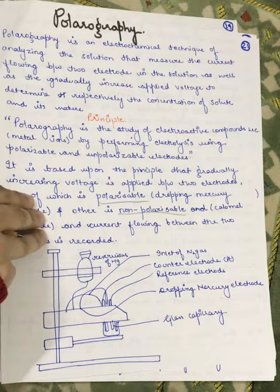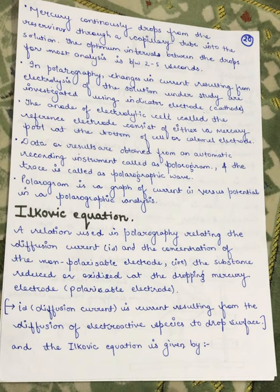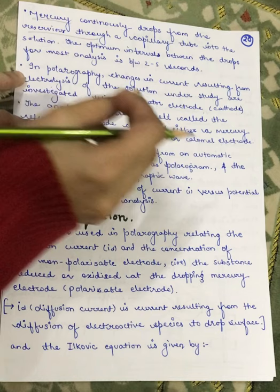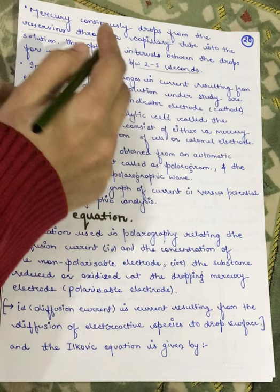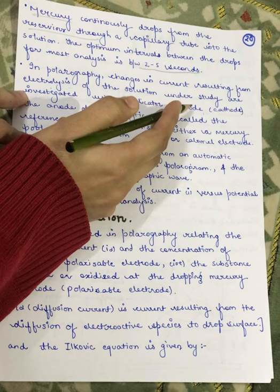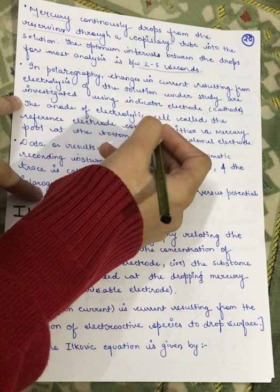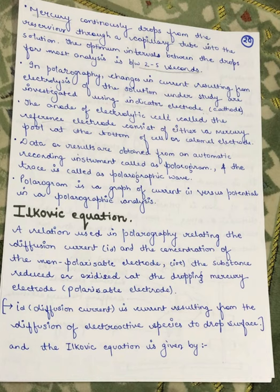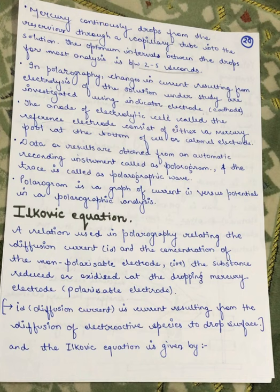Mercury continuously drops from the reservoir through a capillary tube into the solution. The optimum interval between drops for most analyses is between two to five seconds. In polarography, changes in current resulting from electrolysis of the solution under study are investigated using an indicator electrode — the cathode — and the anode of the electrolytic cell, called the reference electrode, which consists of either a mercury pool at the bottom of the cell or the calomel electrode. The data or results are obtained from an automatic recording instrument called a polarogram, and the trace is called a polarographic wave. The polarogram is a graph of current versus potential.